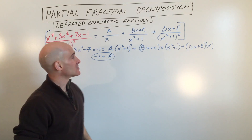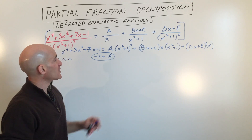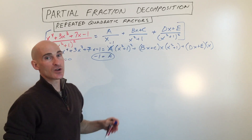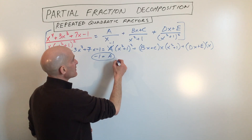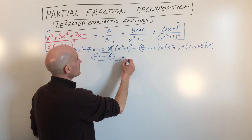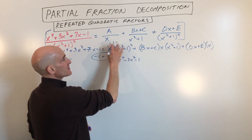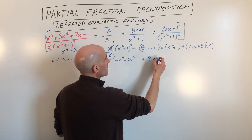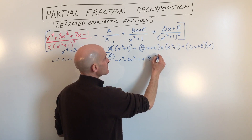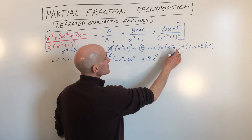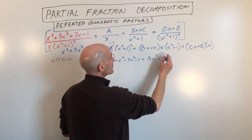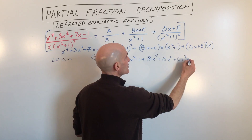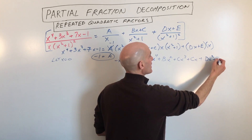That's about all we can do with substitution, so now I'm going to foil this out and replace A with −1 to simplify. Expanding gives us −x⁴ − 2x² − 1, distributing the negative one. Then expanding (Bx + C)(x)(x² + 1): that gives Bx⁴ + Bx² + Cx³ + Cx, plus Dx² + Ex.